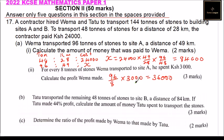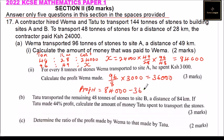12 times 3,000 gives you 36,000 in expenses. So because he was paid 84,000, you subtract the cost of expenses, which is 36,000. That means Wemma made a profit of 48,000.